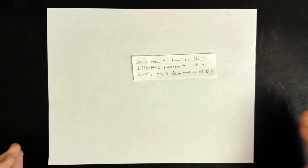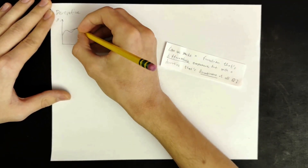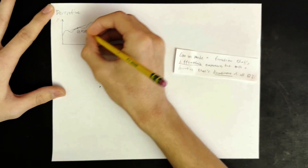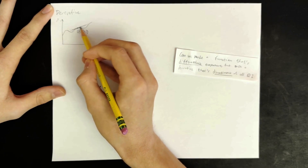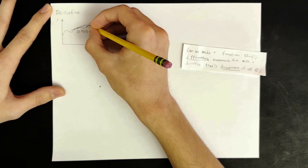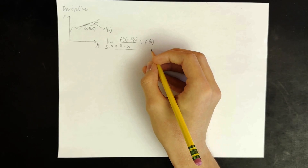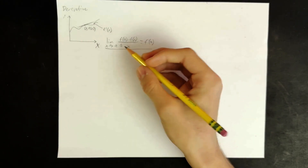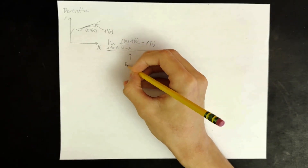To answer this question, first we're going to have to understand what the word differentiable means, and also discontinuous. The derivative of a function at some point is the slope of the tangent line — the line that is tangent to the function at that point. We rigorously define this using a limit. This is the definition of a derivative, and if this limit converges for some value a, then we say that f is differentiable at that value a.